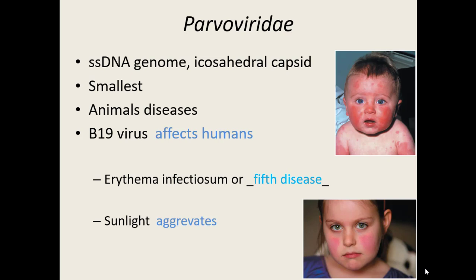It also gets the nickname 'fifth disease' because in the early 1900s — before Google or computers — when patients came in with rashes, there were lists of the top things causing rashes in children, and this virus was number five on that list. Sunlight aggravates it, but the only main symptom is that it causes the skin — usually on the face and cheeks — to become very red. It goes away on its own. It is spread by respiratory secretion — coughing and sneezing. Because of the red cheeks, it also sometimes gets the nickname 'slapped cheek syndrome.' It mostly causes issues in kids more than adults.